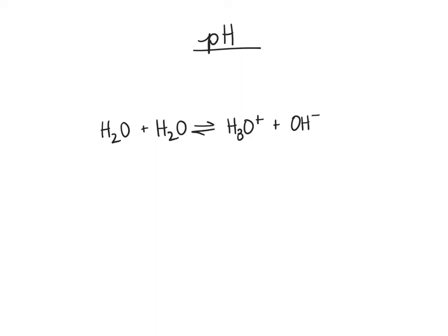Now we're going to talk about pH and the pH scale. The definition of pH is the concentration of hydrogen ions in a solution.